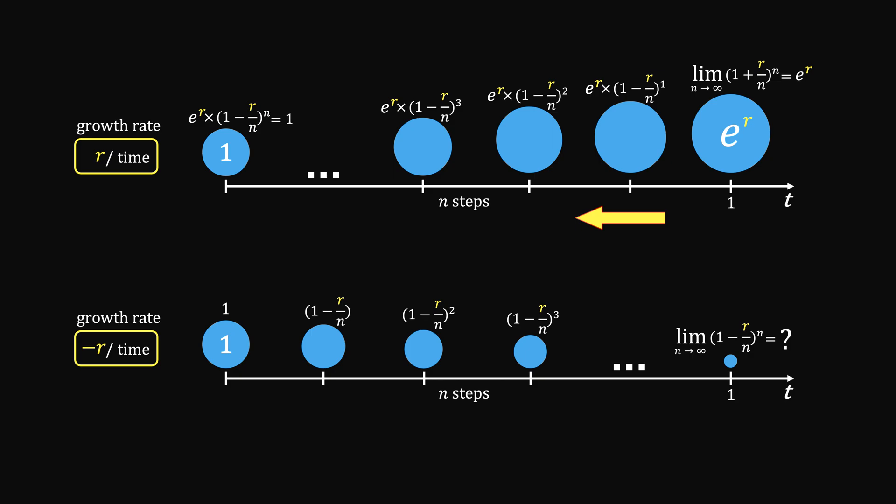It should equal to 1, right? So that means the limit of this guy would be 1 over e to the power of r. It can be represented as e to the power of minus r.